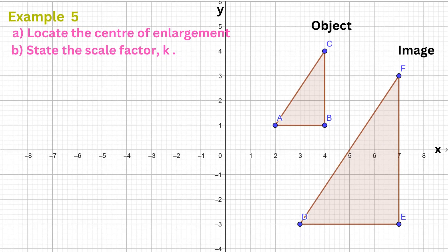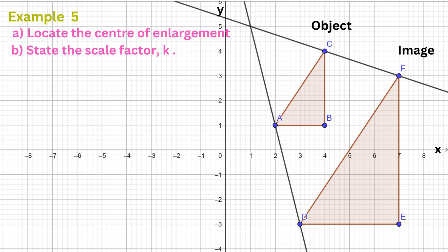In this fifth and final problem, we need to find the centre of enlargement. First, identify corresponding points — one from the original shape and one from the enlarged image. Using a ruler, draw a straight line that passes through each pair of corresponding points, extending the lines beyond the image and the object. Points F and C correspond, points A and D correspond, and points E and B correspond. The point where the lines meet is the centre of enlargement, which is (1, 5).